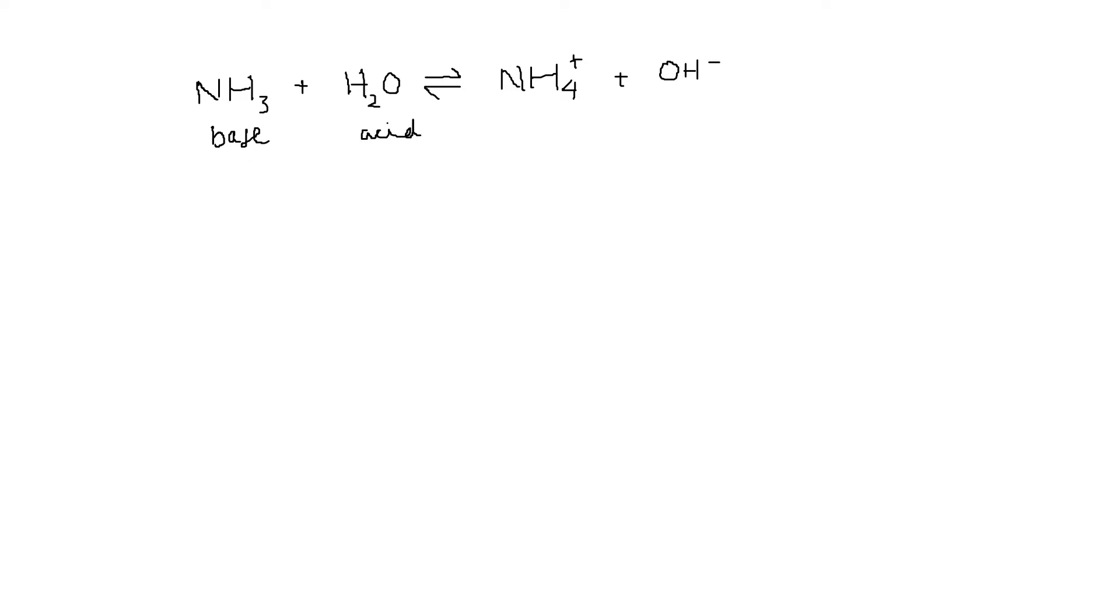Water acts as an acid so it donates a hydrogen ion to the base and becomes the hydroxide ion. You've got this base accepting the hydrogen ion to become an acid, this acid donating a hydrogen ion to become a base, so you've got two conjugate acid-base pairs here.